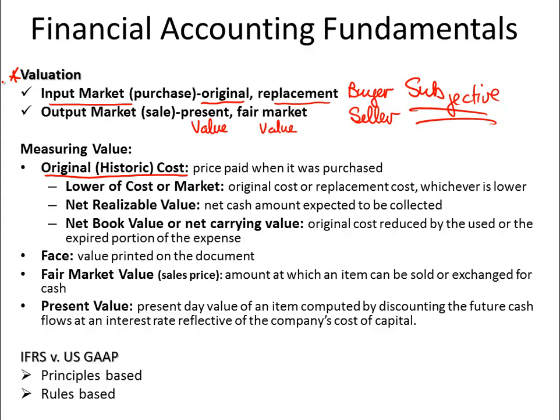Some terminology before we go forward: first, we need to know what the original or historic cost is — that's the price paid when it is purchased, the buyer input market perspective. Also, lower of cost or market: some assets we will value at the lesser of their original cost versus their replacement cost, whichever is lower.